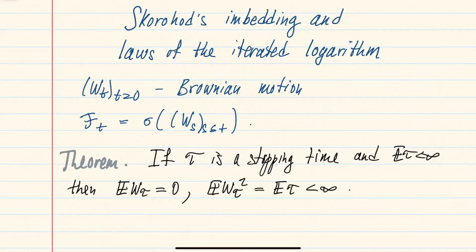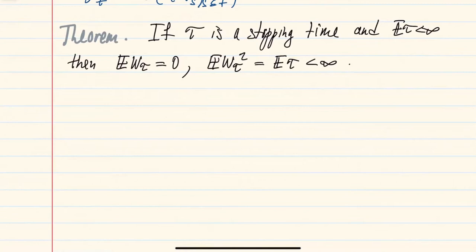In particular, this generalizes the property of the Brownian motion for a fixed time to a stopping time. We know by definition that the variance of the Brownian motion at time t is t, and here we get something of the same form for a stopping time. The proof of this result consists of several steps, and here I will present only the first conceptual step.